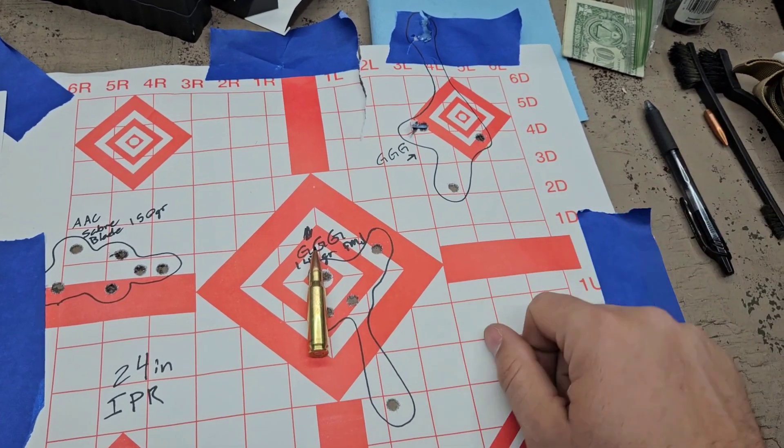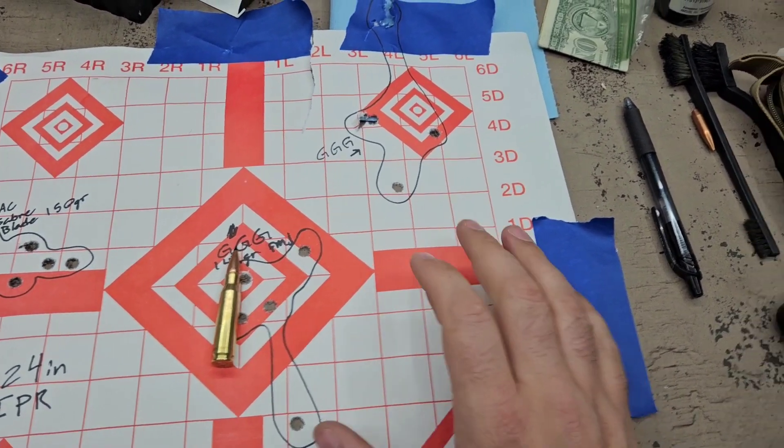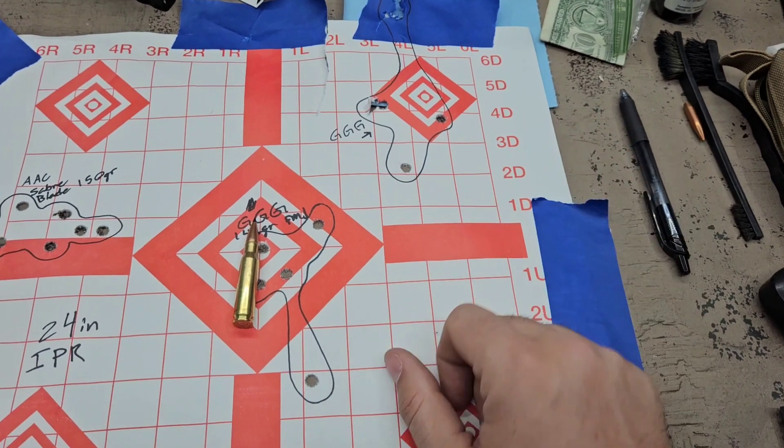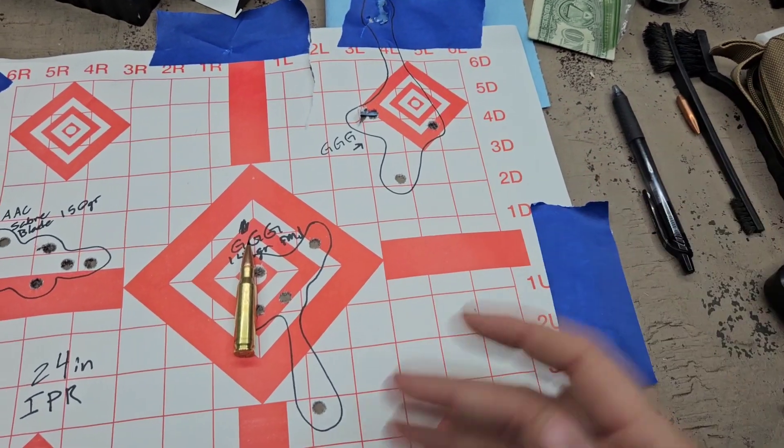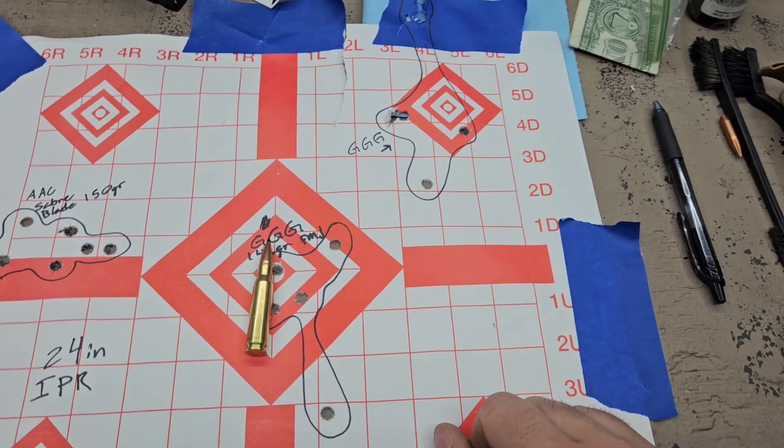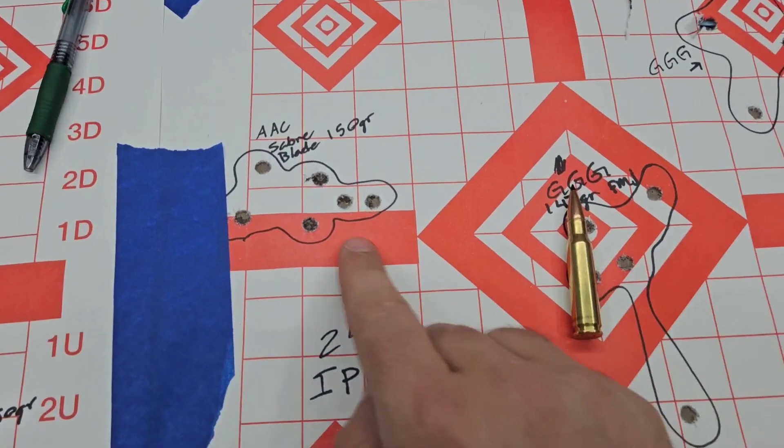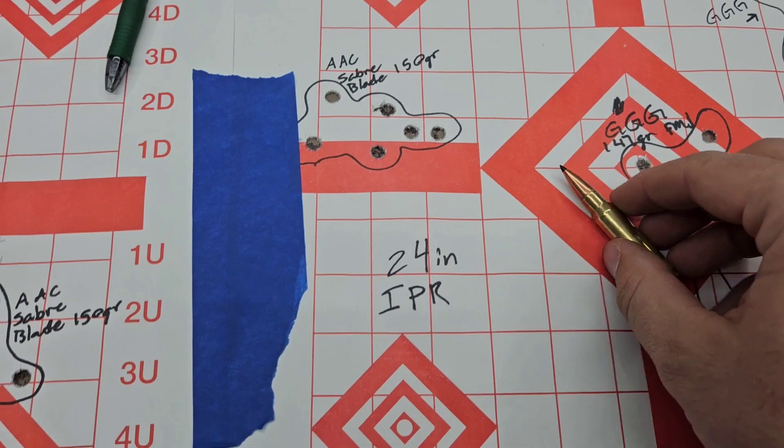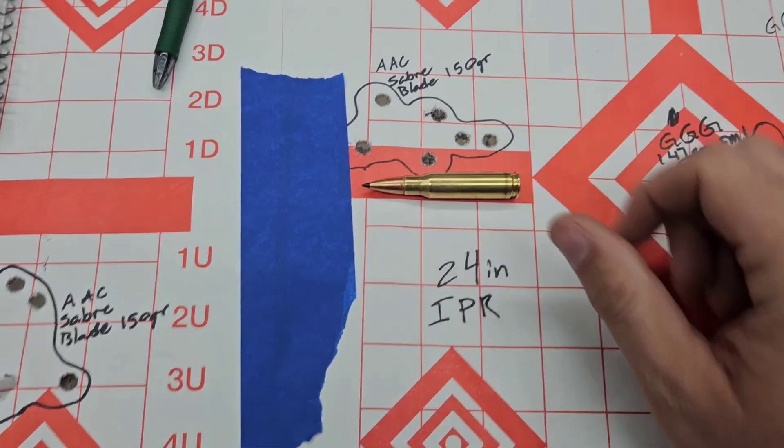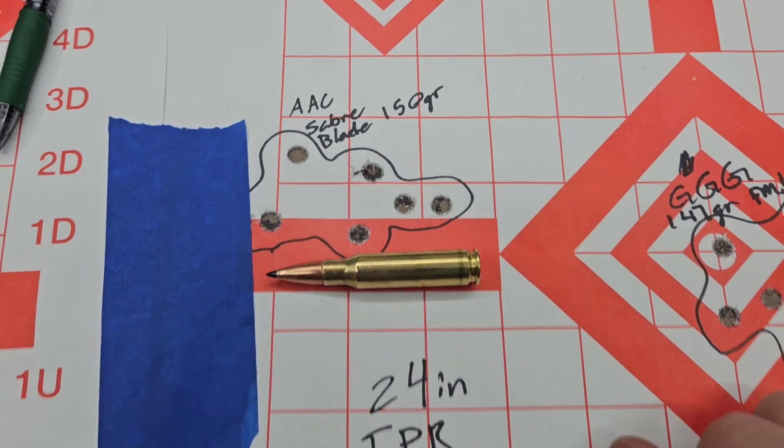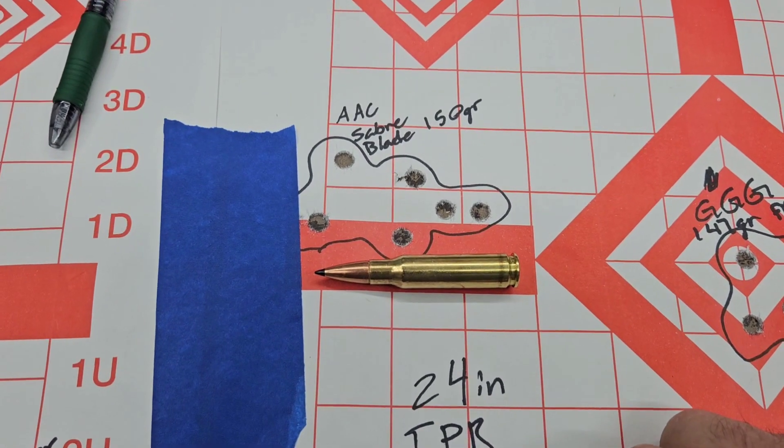I might be able to hit a torso-sized target at 200 yards with it. Outside of that, it's honestly just kind of luck. Out of the 24-inch target, this was the Saber Blade black tip right here. For size reference, we're looking about a 2.5, 3-inch group out of it.